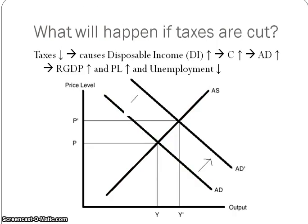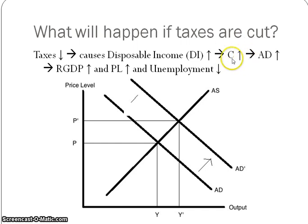If taxes are cut, taxes are not a component of G in that C plus I subscript G plus G — they're not part of that G. Rather, taxes are what affect people's disposable income. If taxes go down, that means people's disposable income goes up. That's the income after taxes — the amount they can spend. Disposable income is a very important term to use when writing your FRQs. When disposable income goes up, consumption goes up, aggregate demand goes up, and ultimately unemployment goes down.